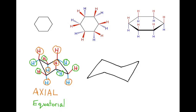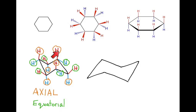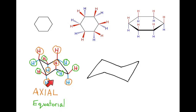As we move around the chair, the hydrogen that's up is axial, then the next hydrogen that is down is axial — red hydrogen up axial, blue hydrogen down axial, red hydrogen up axial. So hydrogens switch from axial to equatorial, to axial to equatorial to axial, and then equatorial. The same pattern applies for the blue hydrogens: down equatorial, down axial, down equatorial, down axial, down equatorial, down axial.